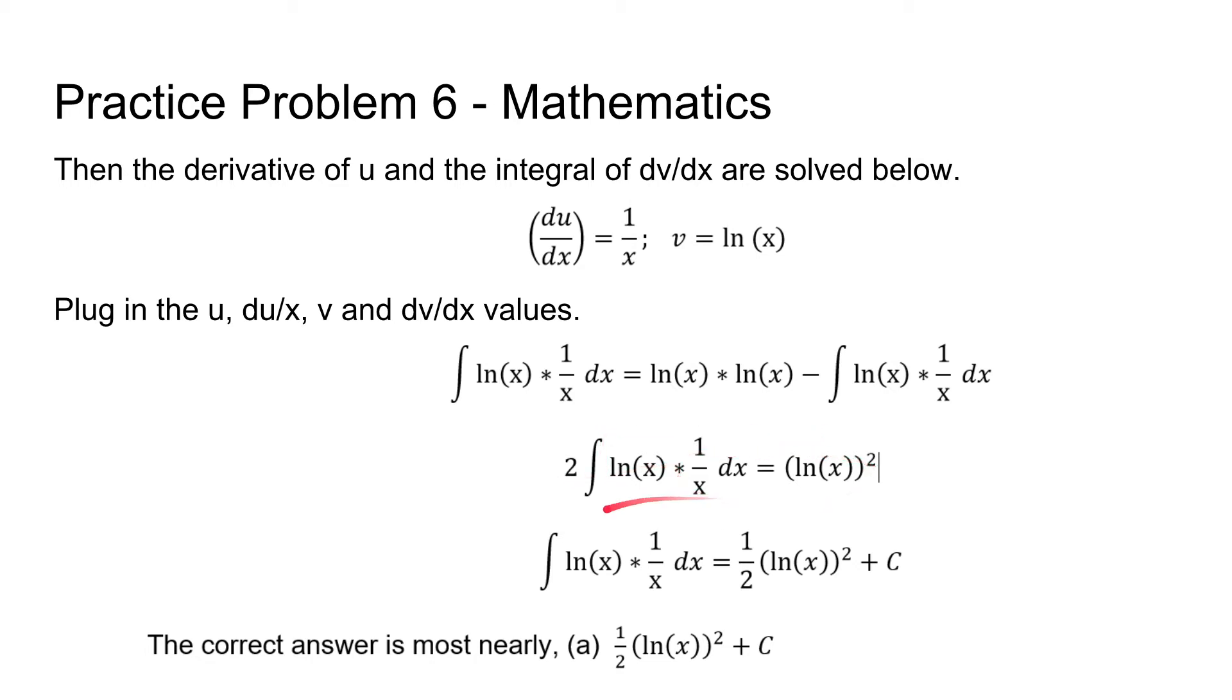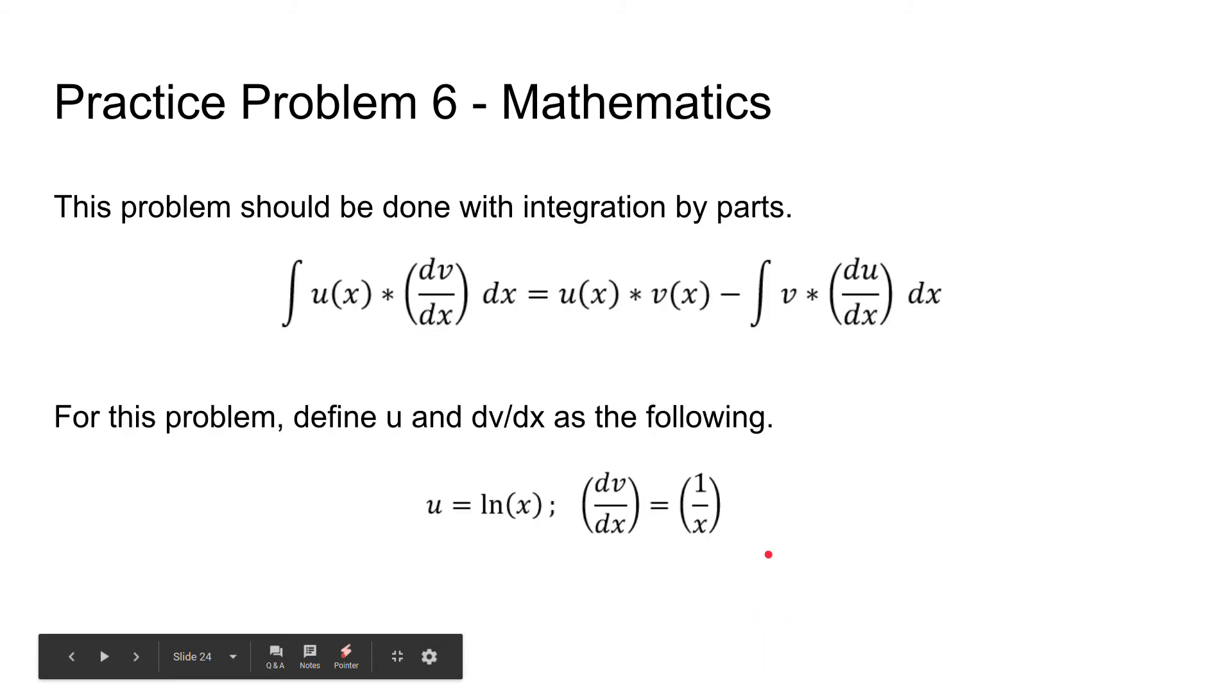We find out that the natural log of x times one over x is going to be equal to one half the quantity natural log of x squared plus some variable c, the constant. So our correct answer is going to be A.